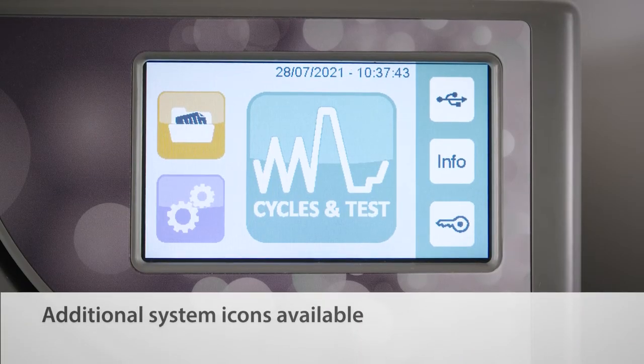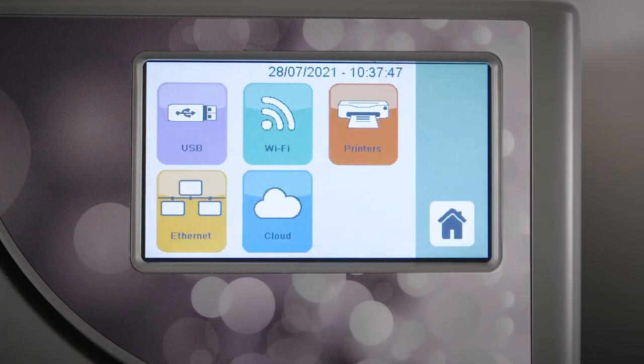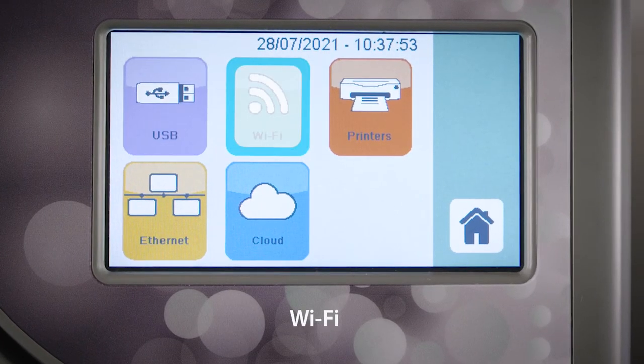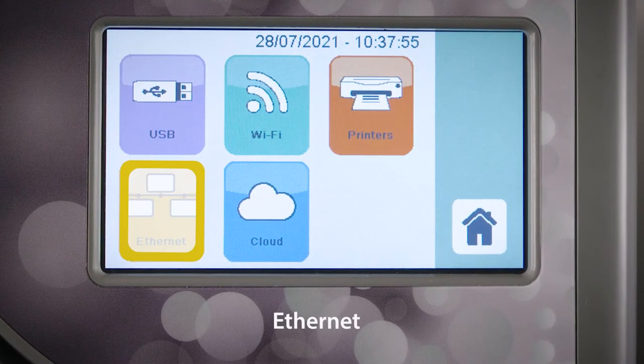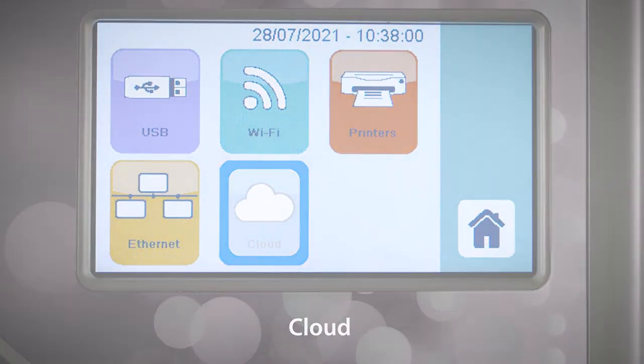There are also some additional system icons available. Select the data management icon to set how you would like the unit to log cycle data, with the option of USB, Wi-Fi, printer, Ethernet, and cloud icons. Select the icon that best suits your data logging needs.